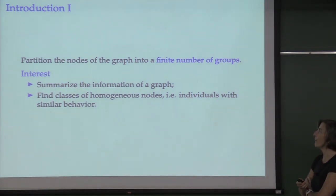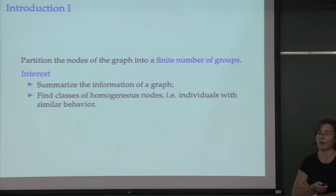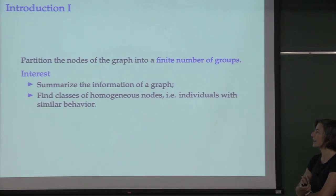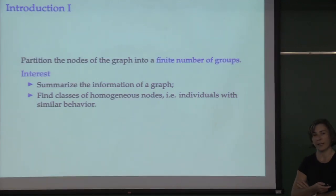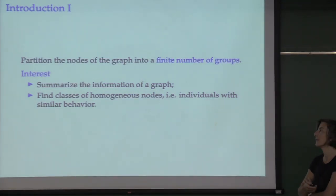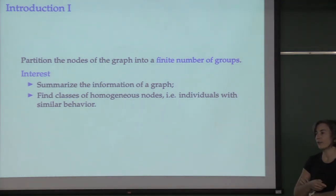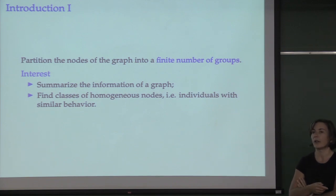The idea is that we want to summarize the information about the graph and find classes of homogeneous nodes — meaning we look for individuals with similar behavior. That's the general idea of clustering in statistics. We already saw in the last theoretical lecture the stochastic block model, which helps you do things like that.